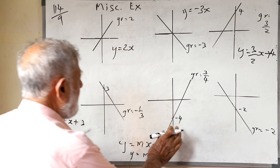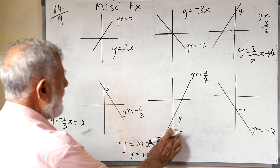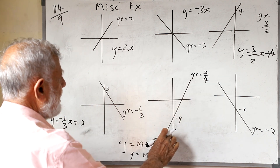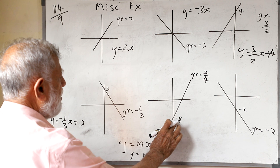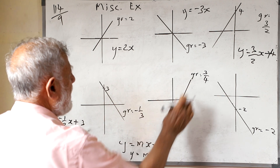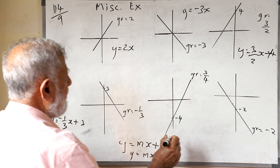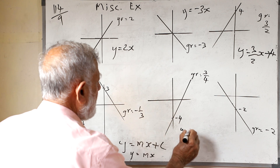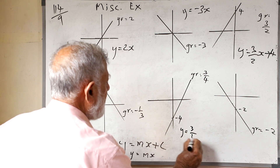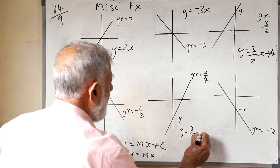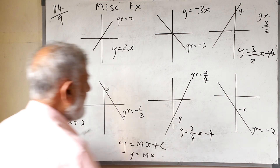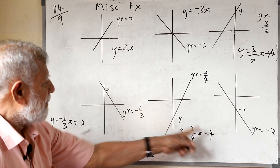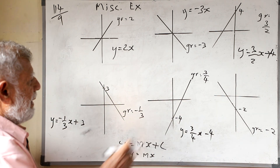Now if you take this line, the y-axis is going through minus 4, and the gradient given is 3/4. So the equation will be y = (3/4)x - 4, where c = -4 as it is going through that point.